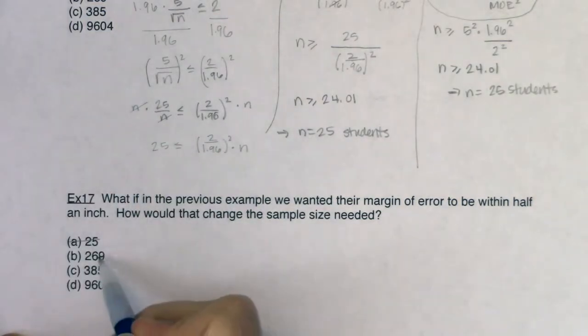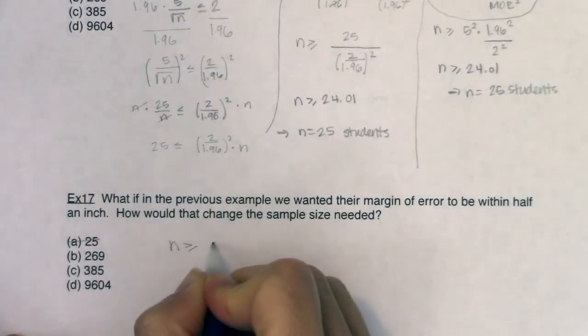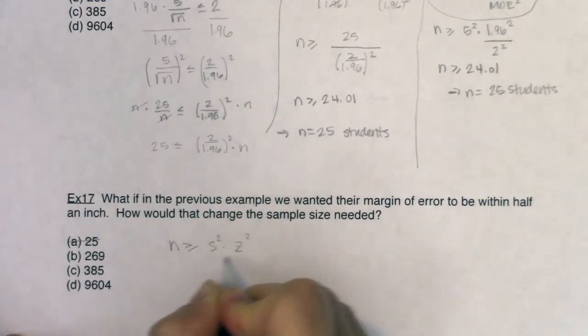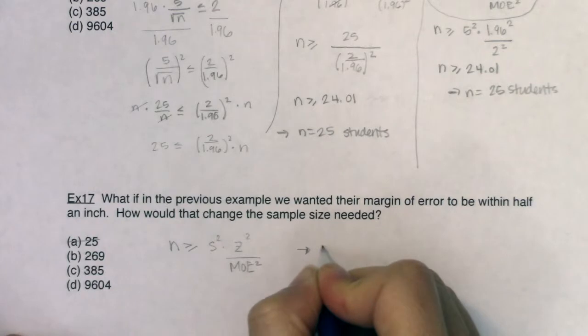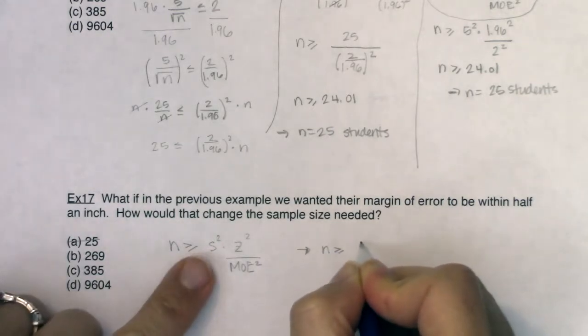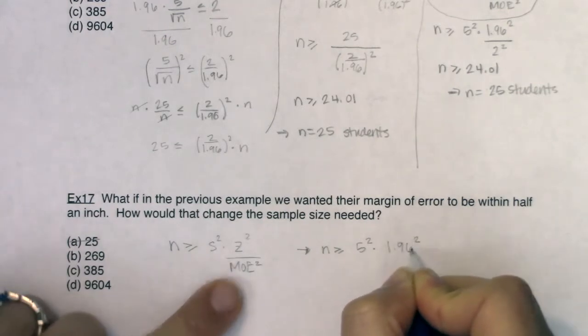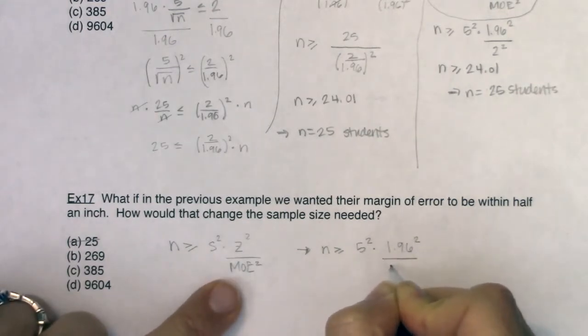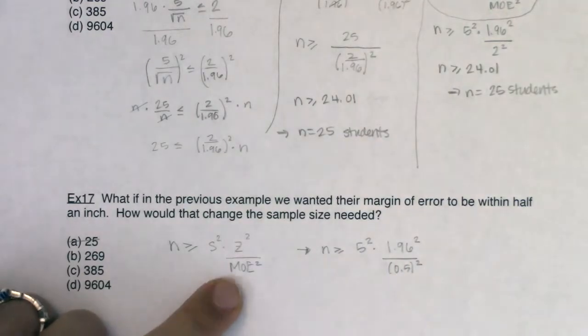I don't know how much larger I need to go. That's what this formula is going to help me with, but it's definitely not 25. So N has to be greater than or equal to S squared times Z squared divided by the margin of error squared. So let's see what these numbers are. So in this case, N has to be greater than or equal to S was five squared. Z was still 1.96 squared. The margin of error this time was half an inch. So be careful here. We're going to put 0.5 or you can put the fraction one half, but I want to square one half.